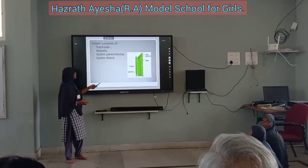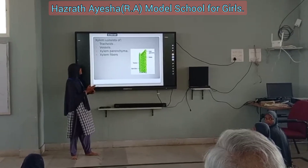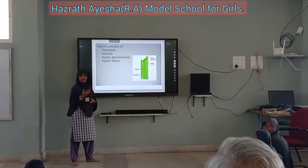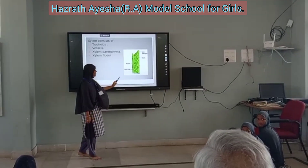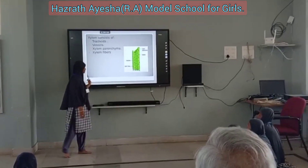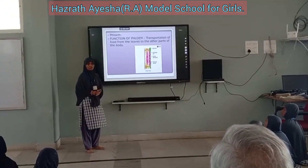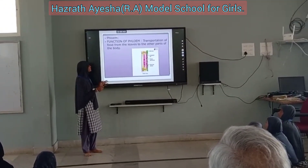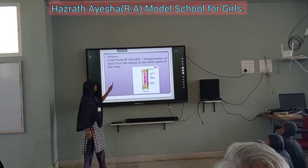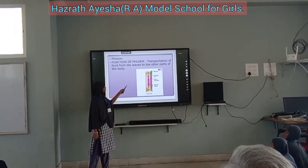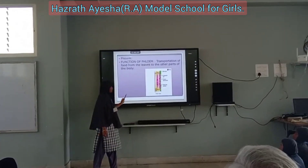This is the picture. Xylem consists of tracheids, vessels, xylem parenchyma, and xylem fibers. This is a picture of xylem. Phloem — the function of phloem is the circulation of food from the leaves to the other parts of the plant. As you can see, a picture of phloem is shown.